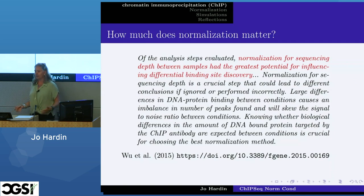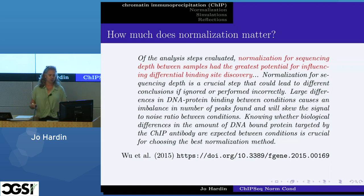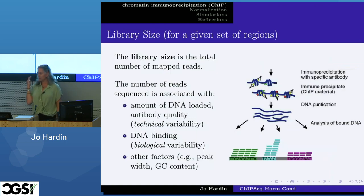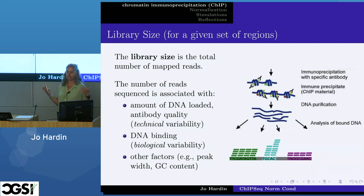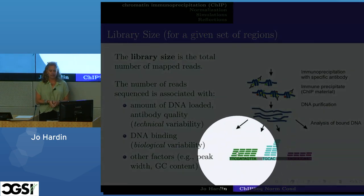A little vocabulary: library size is the total number of mapped reads. If I take all my reads across the entire genome and just count them — that's my library size: how many reads did I map onto my genome from my experiment? The number of reads that get mapped changes for a variety of reasons. It might have to do with the amount of DNA loaded into the sequencer or antibody quality — those are technical reasons. Or it might differ because of actual DNA binding, which is the biological variability we're trying to uncover.